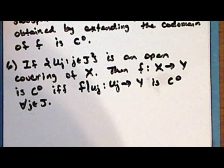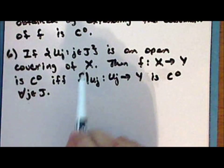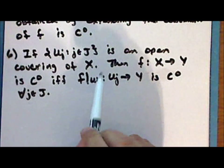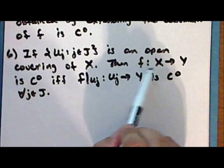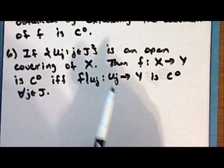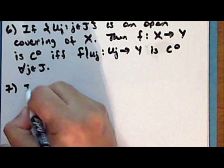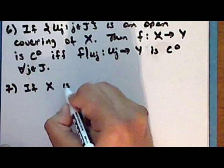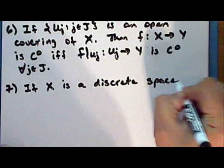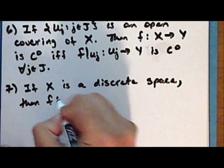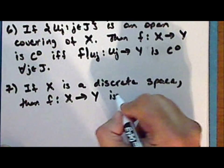Recall that in lecture 16, as a corollary, we proved that given a subspace of the space X, the restricted function mapping that subspace into the space Y is continuous if the function F mapping X into Y is continuous. Here we're extending this to several open subsets. And if the space X is a discrete space, then the function F mapping the discrete space X into any arbitrary topological space Y is continuous.